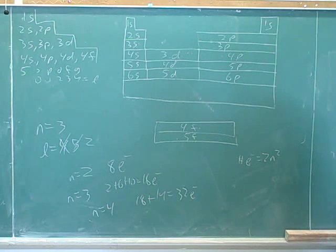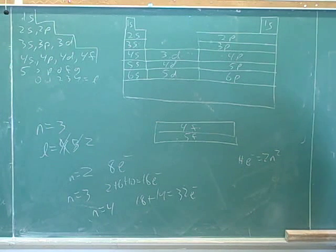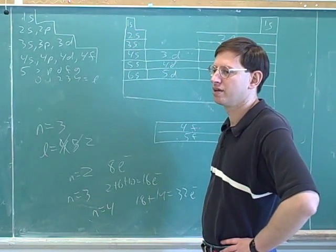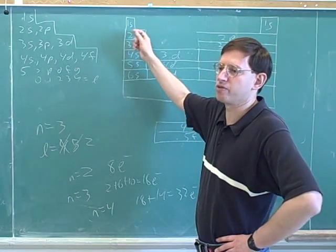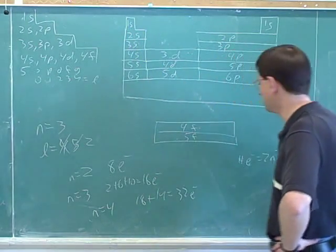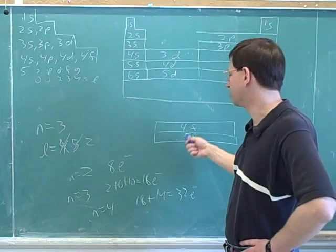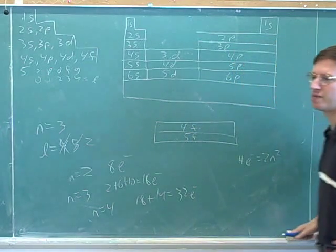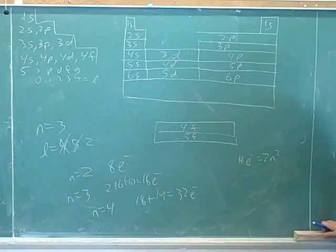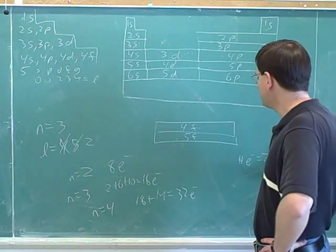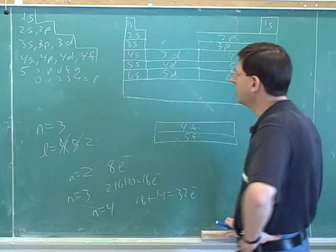How many electrons can fit in one orbital? Two. So how many orbitals are in the s block? One orbital with room for two electrons. How many orbitals in the p block? Three. The number of orbitals is half the number of electrons — you can read that off the periodic table as well.